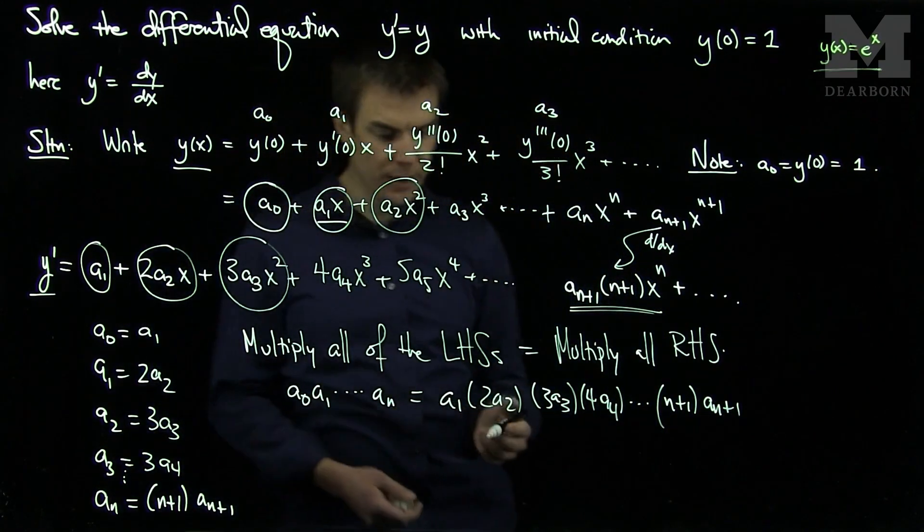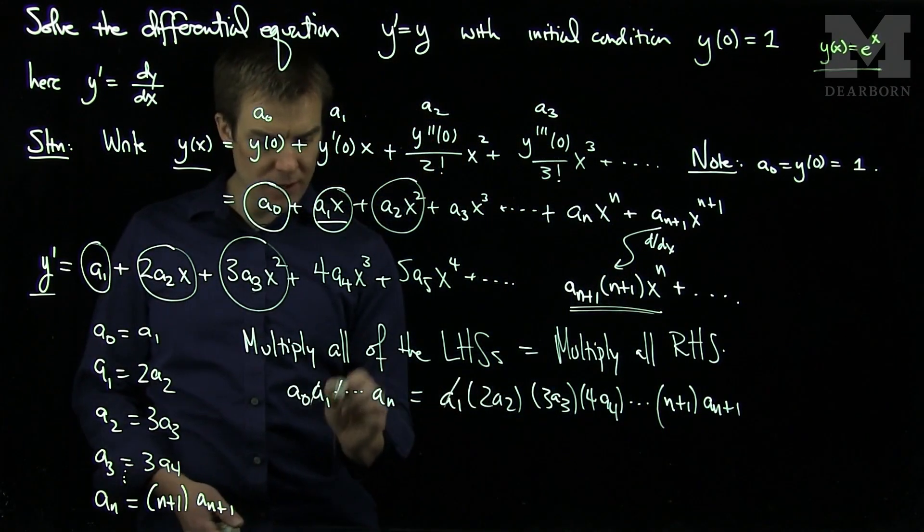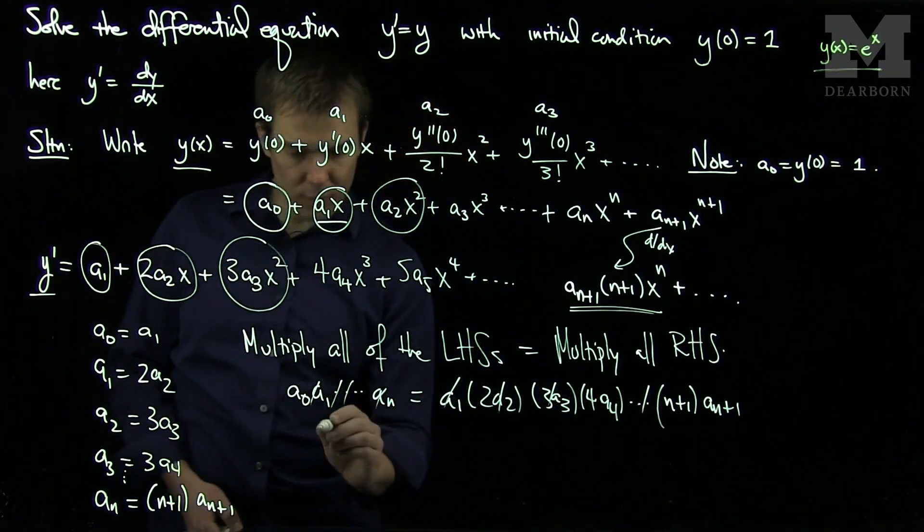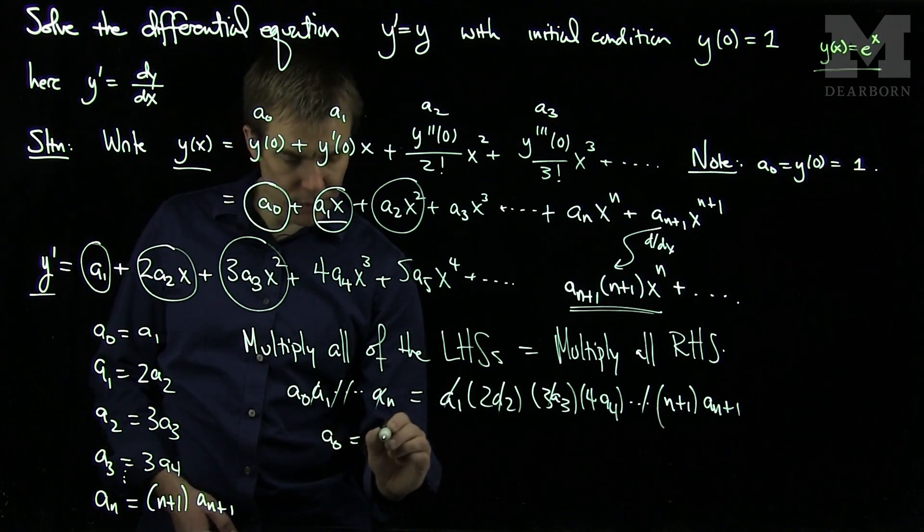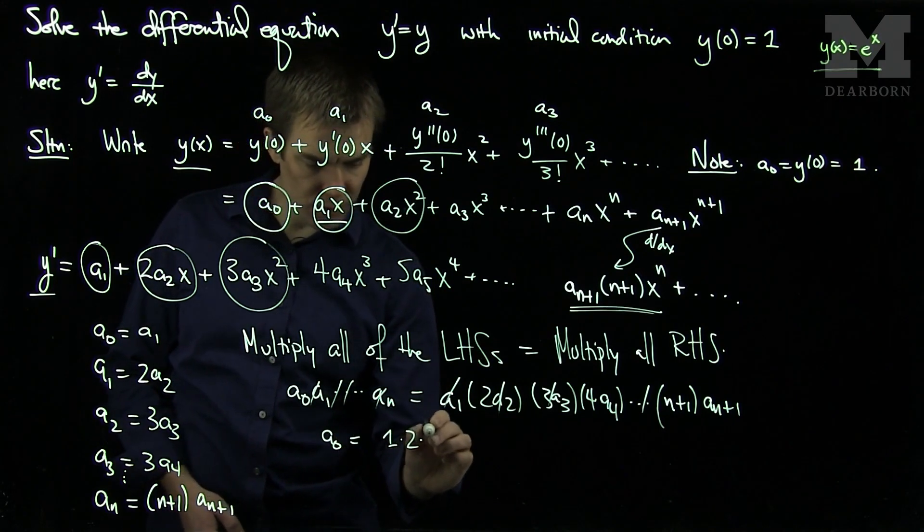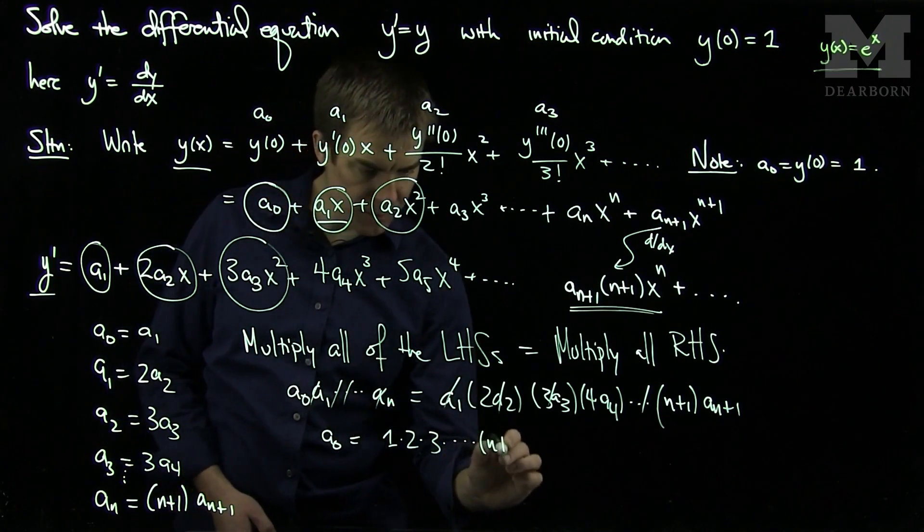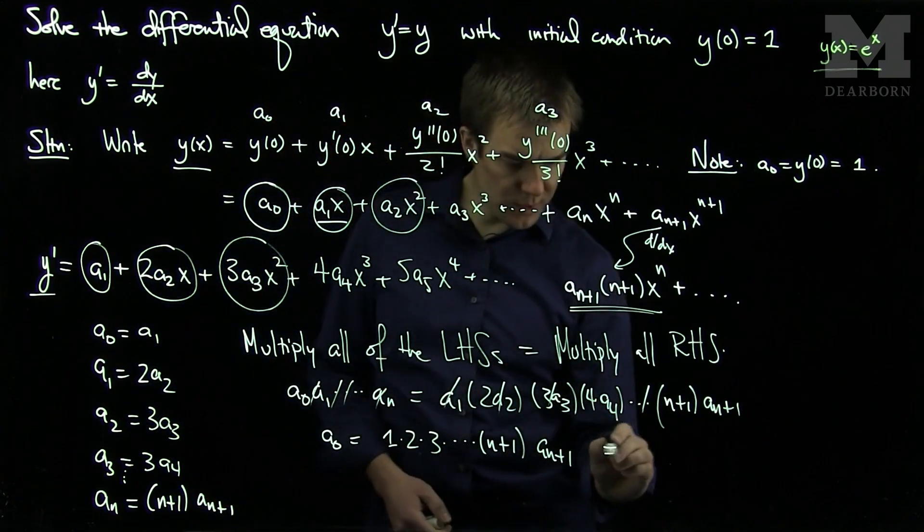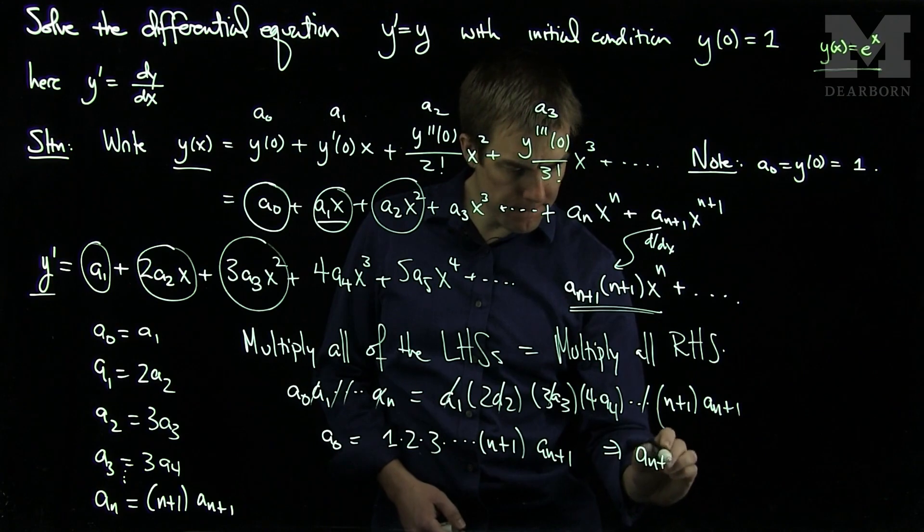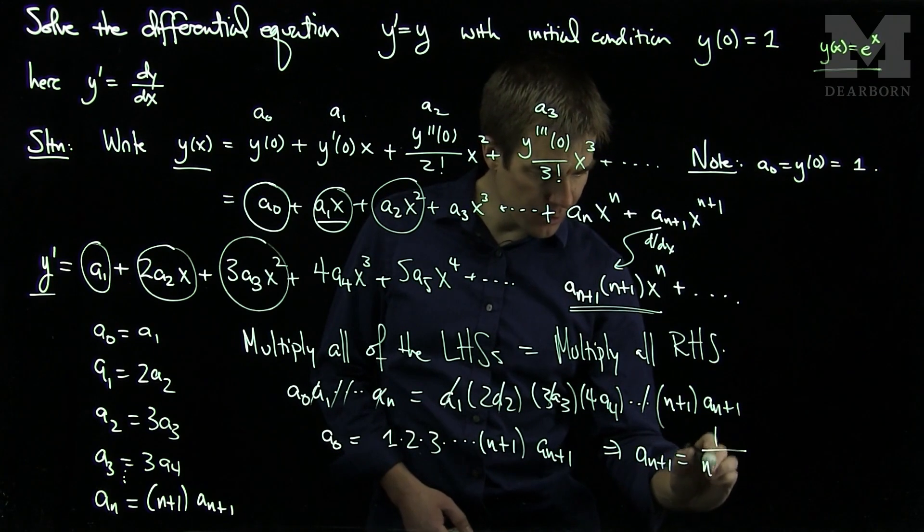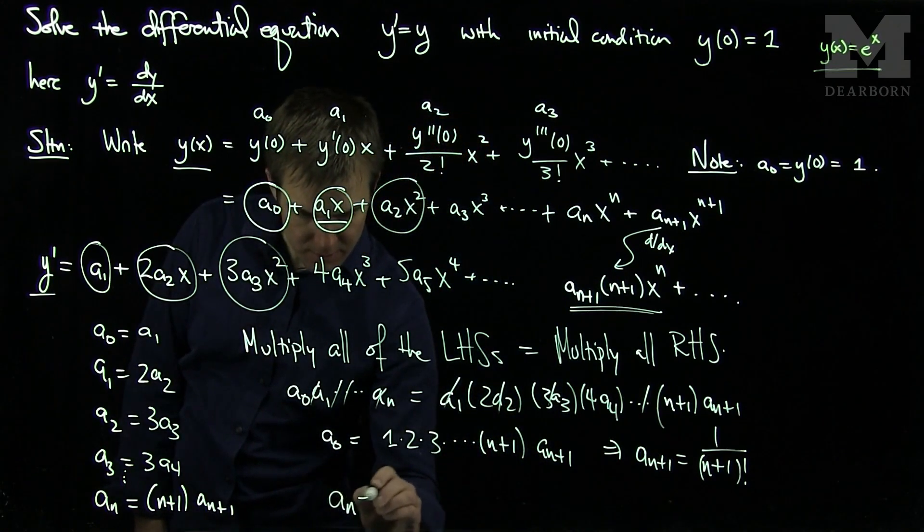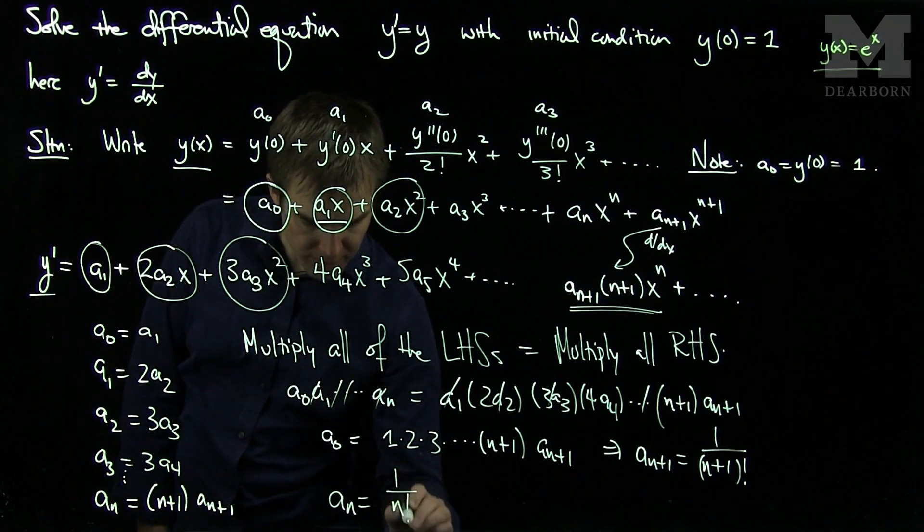Now what will happen is the a1 will cancel, the a2 will cancel, the a3 will cancel, the an will cancel, and we'll just be left with a0 is equal to 1 times 2 times 3 times n plus 1 times an plus 1, which tells me that an plus 1 is 1 over n plus 1 factorial, which is the same thing as saying that an is 1 over n factorial.